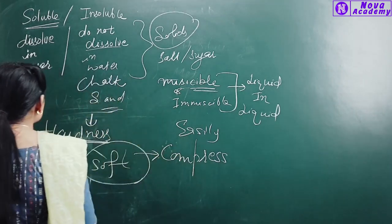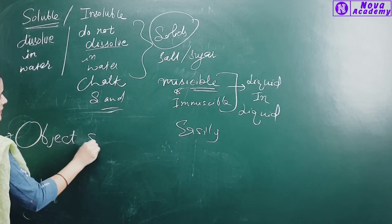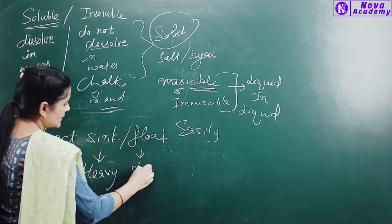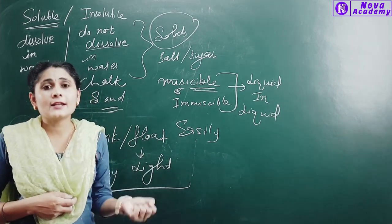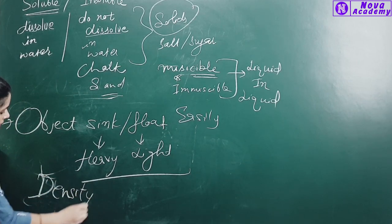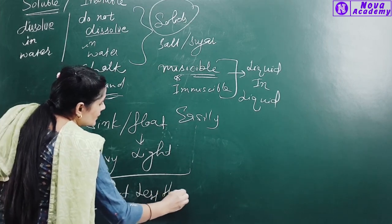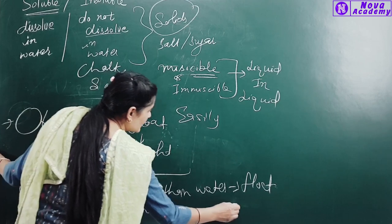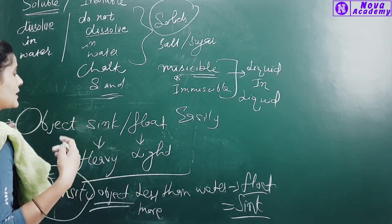Another property is whether objects sink or float. The objects that are dense will sink deep; the objects that are light will float. A ship or boat uses light material so that it floats easily. We can see density here: if the density is less than water, then it floats; if the density is more than water, then it will sink. This is also a method to check which object will sink or float.